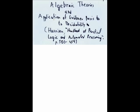And the lecture was on Algebraic Theories and Application of Gröbner Basis to Decidability. In particular, this is the decidability of universal formulas in the language of rings, or in the axioms that axiomize rings, that particular algebraic structure. And this will be taken from the Harrison Handbook of Practical Logic and Automated Reasoning, pages 380 to 414.